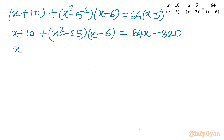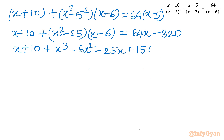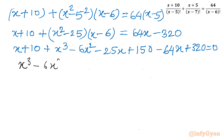Expanding (x²-25)(x-6) gives x³ - 6x² - 25x + 150. Adding (x+10) gives x³ - 6x² - 24x + 160. Setting equal to the right-hand side and simplifying, we get the cubic equation x³ - 6x² - 88x + 480 = 0.